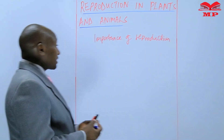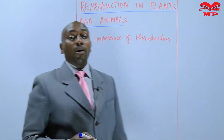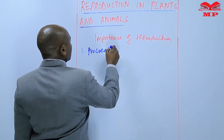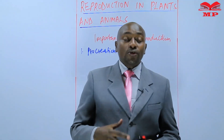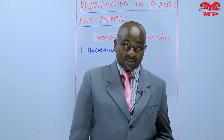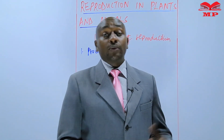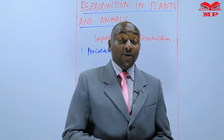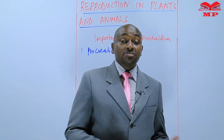The first importance is that reproduction is important for procreation. Procreation is the ability of organisms to replace themselves. We know that organisms cannot live forever — with time, they will die and they need to be replaced. Otherwise, if those organisms are not replaced, then the species may become extinct.